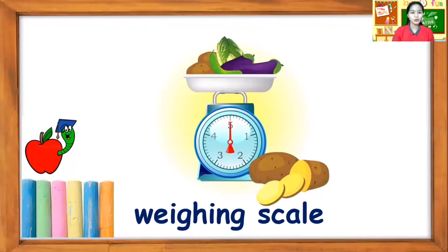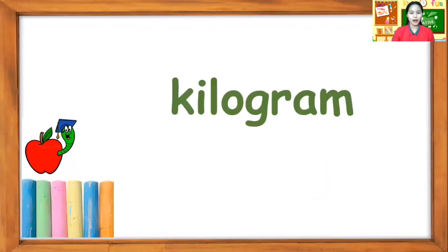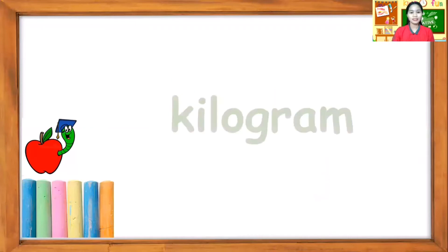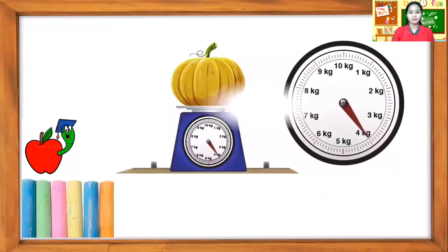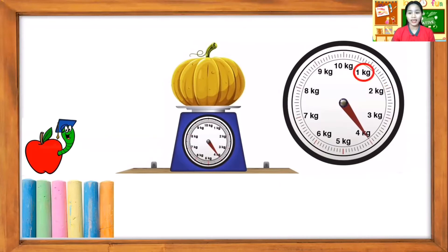Okay, next word is kilogram. One more time. Kilogram. Very good. Okay, what is a kilogram? Kilogram — do you see these numbers, one to ten? You do? Very good. So those are the indications that they are in kilogram.